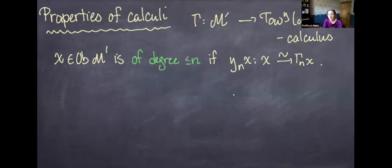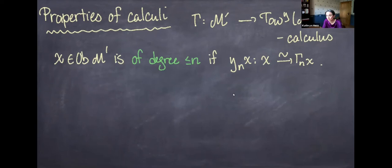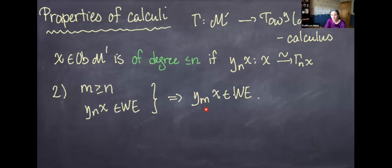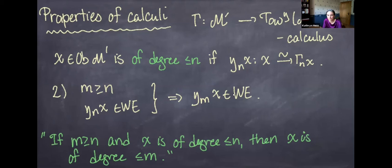There's also a natural notion of an object being of degree ≤ N: an object in M' is of degree ≤ N if the comparison map to the Nth stage of the tower is actually a weak equivalence. One can check: if M ≥ N and X is of degree ≤ N, then X is also of degree ≤ M. That's really what you'd want — degree ≤ N implies degree ≤ M for M ≥ N.